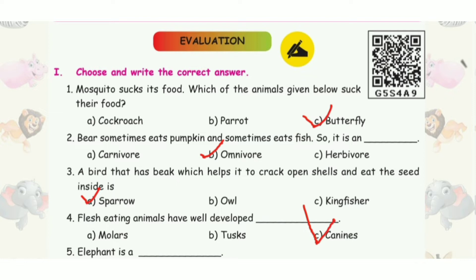Second question: an animal that sometimes eats plants and sometimes eats other animals. The answer is option B, omnivore.